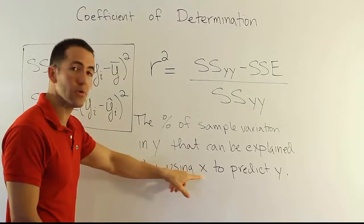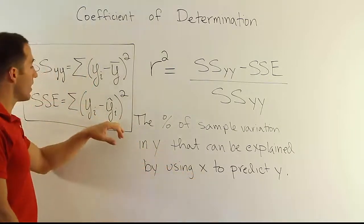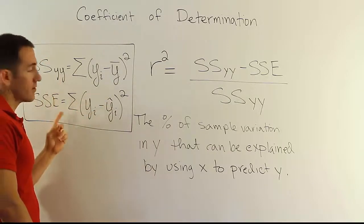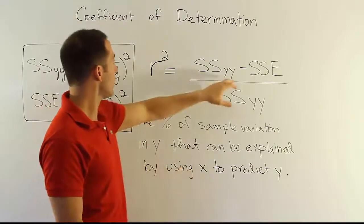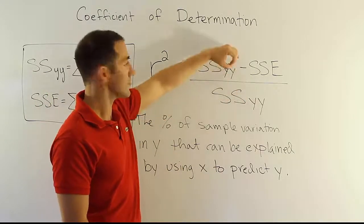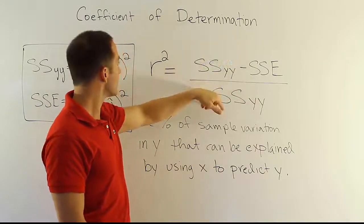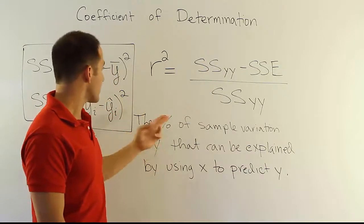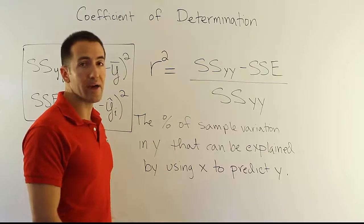So when x has absolutely no role in predicting y, this term becomes y bar, making these two terms equivalent. So let's imagine that scenario, x has no role, and these two are the same. It means you get a zero on top, it means the ratio becomes zero, it means r squared becomes zero, and you'd be saying that 0% of the sample variation in y can be explained by x.